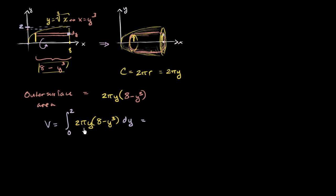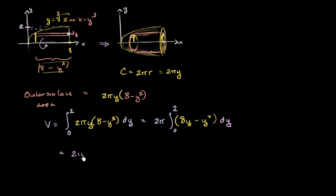This is going to be equal to — we can take out the 2π — 2π times the definite integral from 0 to 2 of, multiplying through by y, we get 8y minus y to the fourth, all times dy. This equals 2π times the antiderivative: the antiderivative of 8y is 4y squared, and the antiderivative of negative y to the fourth is negative y to the fifth over 5.